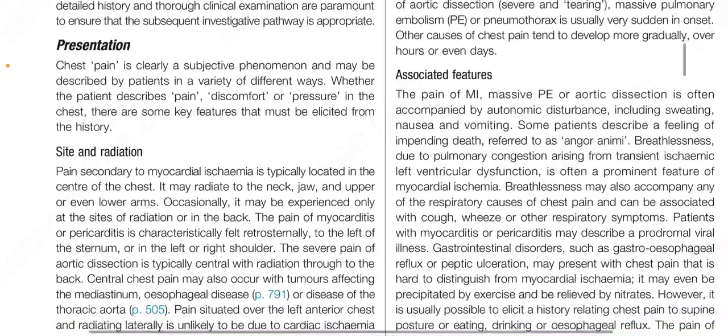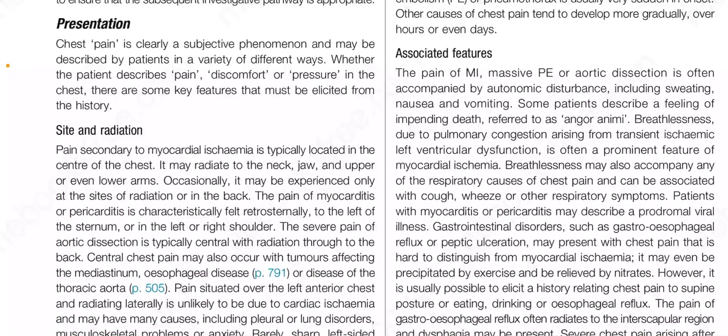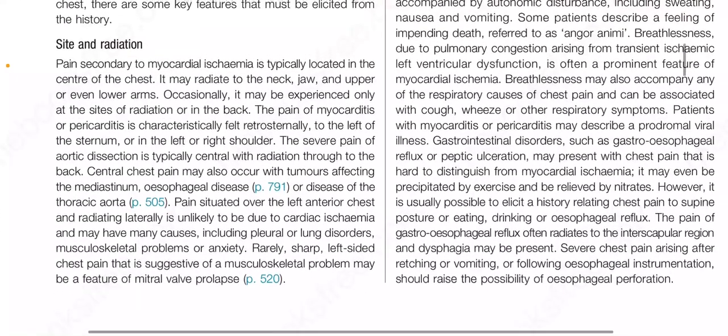Now the presentation. Chest pain is clearly a subjective phenomenon and may be described by patients in a variety of different ways. Whether the patient describes pain, discomfort or pressure in the chest, there are some key features that must be elicited from the history. Regarding site and radiation, pain secondary to myocardial ischemia is typically located in the center of the chest. It may radiate to the neck, jaw and upper or even lower arms. Occasionally, it may be experienced only at the sites of radiation or in the back.